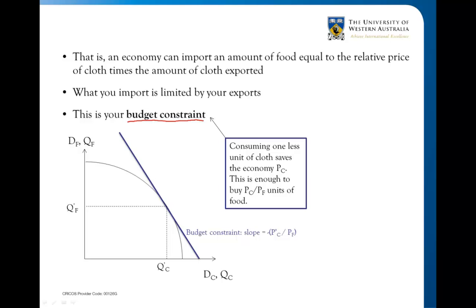Consuming one less unit of cloth saves the economy P_C — we're not spending that amount on cloth. That money we're not spending on cloth can be used to buy that many units of food. That's the constraint: you can't do more than that. You can't take the savings from spending less on cloth and buy more food beyond that limit. That's why this is the budget constraint — you can't go beyond it.